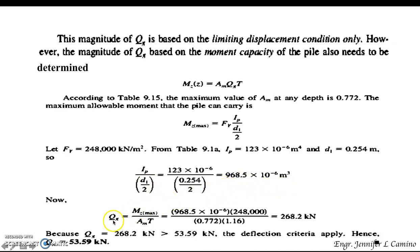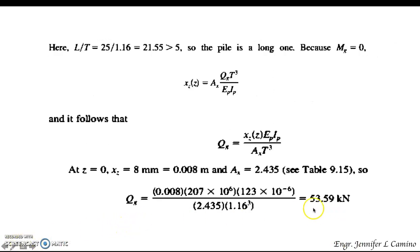Substituting into the moment capacity equation gives Q_g = 268.2 kN. Since 268.2 kN is greater than 53.59 kN, the deflection condition governs. Therefore the allowable lateral load is adopted as Q_g = 53.59 kN.